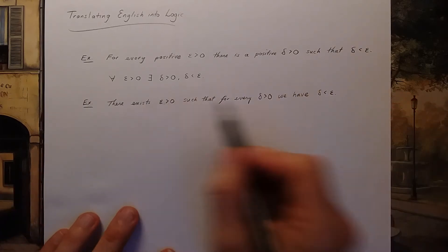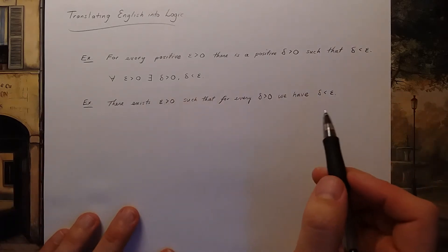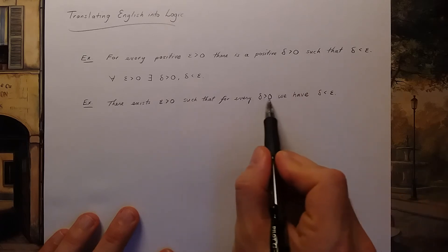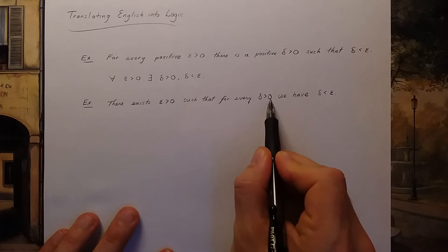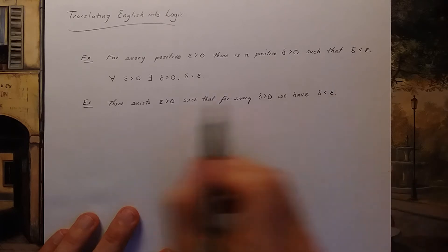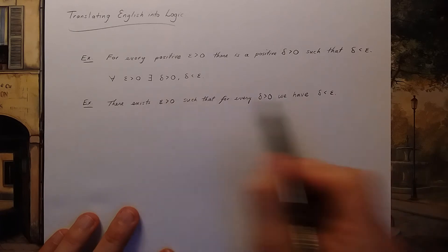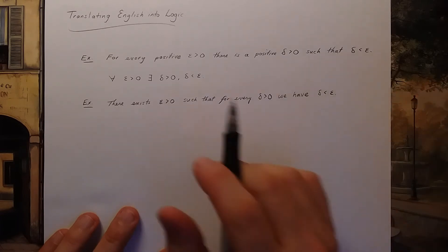This actually happens to be a false statement. It says that every single positive number is smaller than some value epsilon. This would be equivalent to saying there's a single biggest number which of course there isn't.